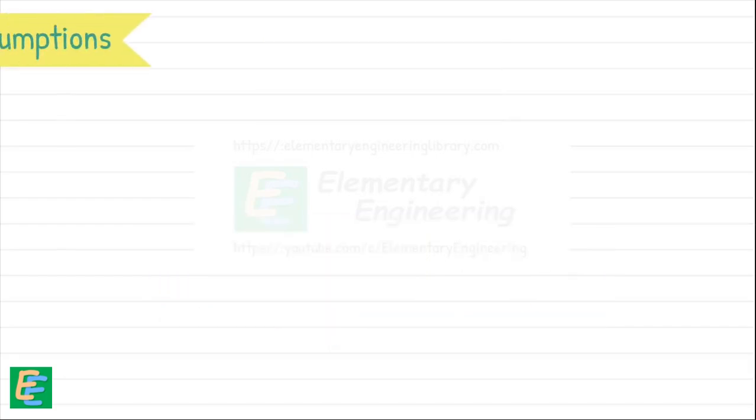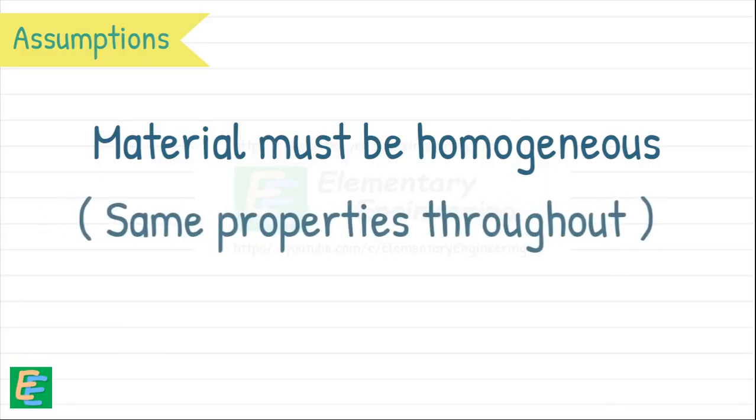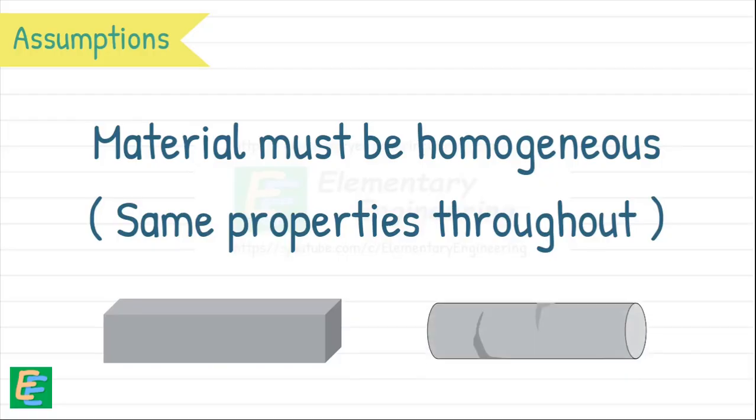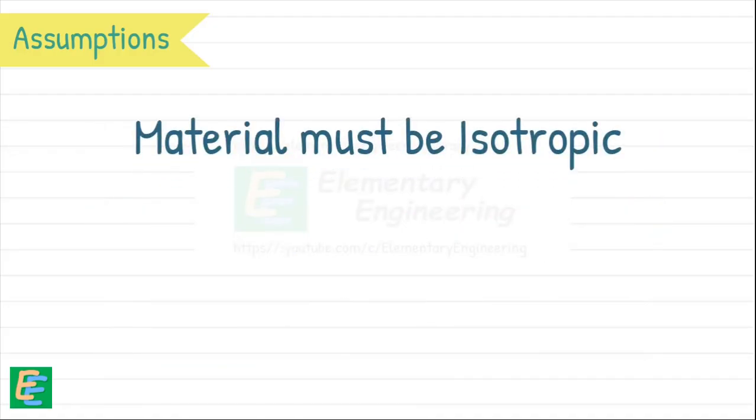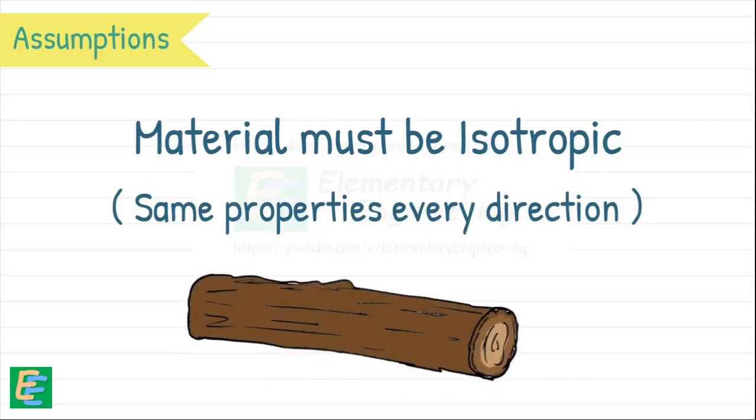Those conditions are assumptions that first the material must be homogeneous. Meaning it has the same properties throughout. Think of a pure block of steel. It's same everywhere. We are not dealing with something that suddenly changes composition. Second, it must be isotropic. Its properties should be same in every direction.